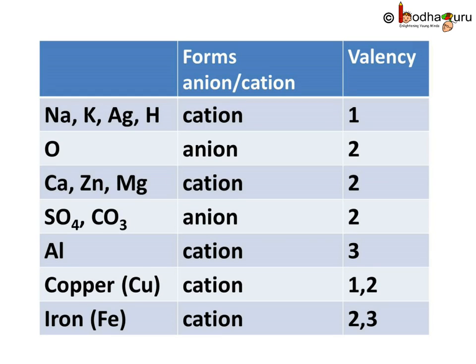Here is a list of valency of a few common elements and groups. For example, sodium, potassium, silver, and hydrogen form cations and have a valency of 1. Oxygen forms an anion and has a valency of 2. Calcium, zinc, and magnesium form cations and have a valency of 2. Polyatomic ions such as sulfate and carbonate form anions and have a valency of 2. Aluminium forms a cation and has a valency of 3. Copper forms a cation with a valency of either 1 or 2. Iron also forms a cation but with a valency of 2 or 3. So, that was all about writing a chemical formula. Bye-bye, see you in the next one.